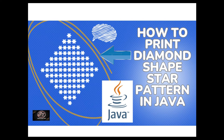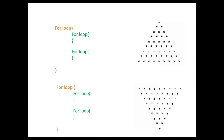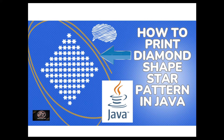Hi guys, welcome to Simplify Tech and Programming. In today's session we are going to check how we can print a diamond shape star pattern in Java. There are different patterns you can draw in Java. This diamond shape is like a combination of pyramids — one pyramid and one more pyramid upside down. Two pyramids in mirror shape will form a diamond. We are using Java 17 and Eclipse IDE.